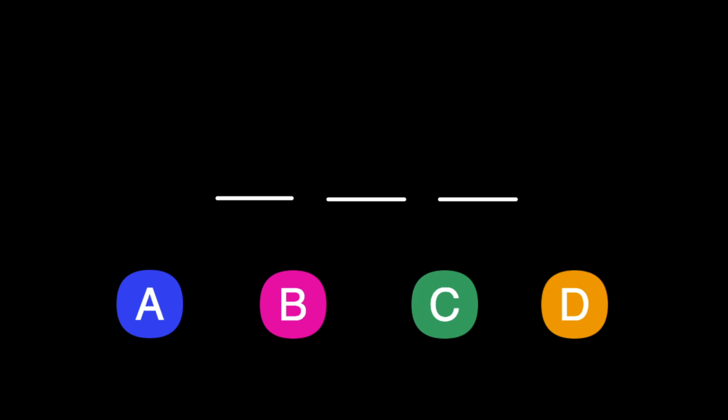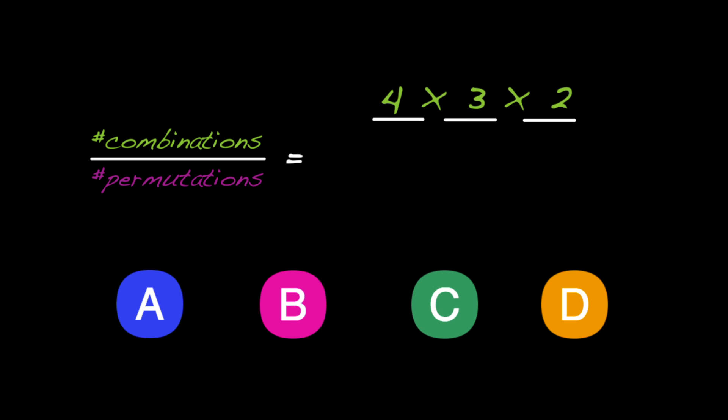So when choosing three actors from four actors total, we can write our calculation as 4 times 3 times 2 over 3 factorial, which equals 4.